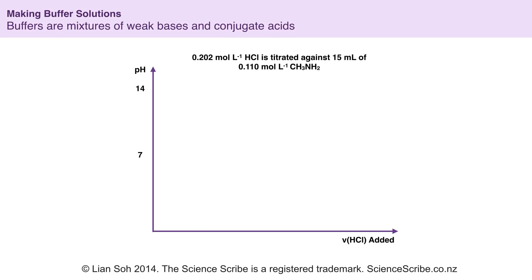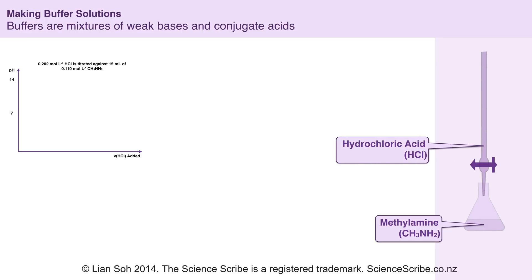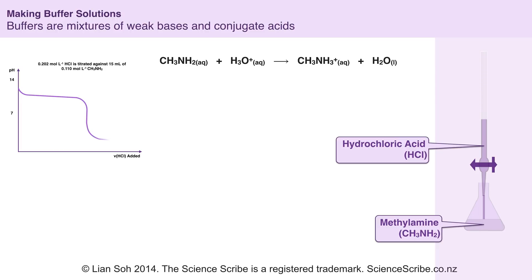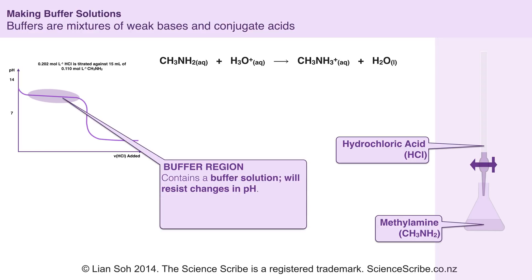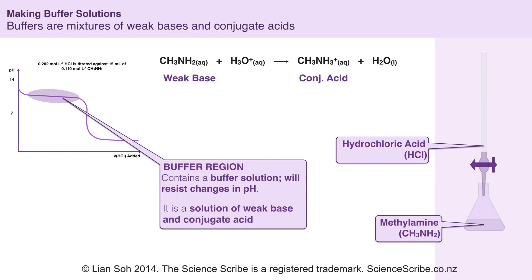Suppose if I was doing a titration between hydrochloric acid and methyl amine. In my flask I'm going to have a weak base of methyl amine, and in the burette I'm going to have a strong acid of hydrochloric acid. As I do this titration I'll be aiming for the following reaction between the methyl amine and the hydronium ions found in hydrochloric acid. When I add the hydrochloric acid I notice the following changes in pH. I also notice that before the equivalence point there is a part where I can keep adding hydrochloric acid and the pH doesn't change very much. This region is called again the buffer region — it's a buffer region because it also contains a buffer solution. This time though it's a mixture of weak base and conjugate acid.